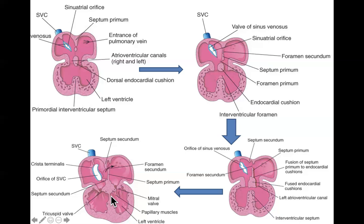The septum between the two atria is a little more complicated. You have this primary growth out of the roof of the heart called the septum primum. The septum primum starts to grow out, and as it does it actually breaks off and migrates down and bumps into this piece of tissue called the cardiac cushion - or endocardial cushion, depending on which section of the book you're reading. The septum primum breaks away, migrates down, and fuses to this cardiac cushion.